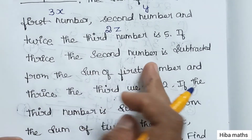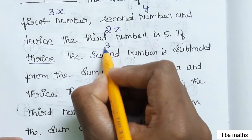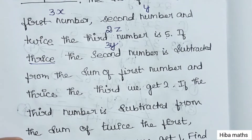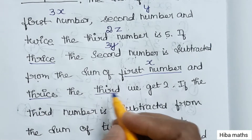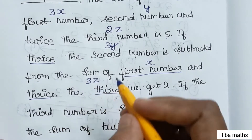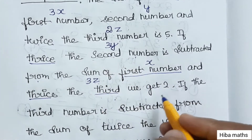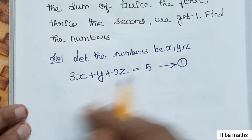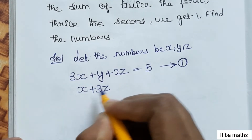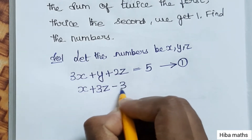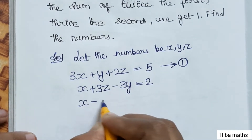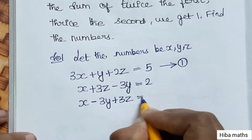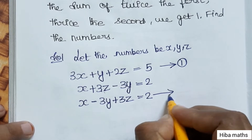If thrice the second number — that is 3 times Y — is subtracted from the sum of the first number X and thrice the third number 3Z, the result is 2. So the second equation is: X - 3Y + 3Z = 2.